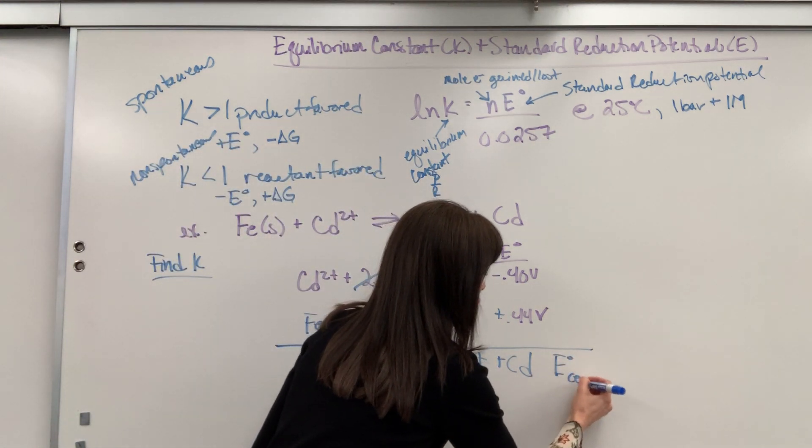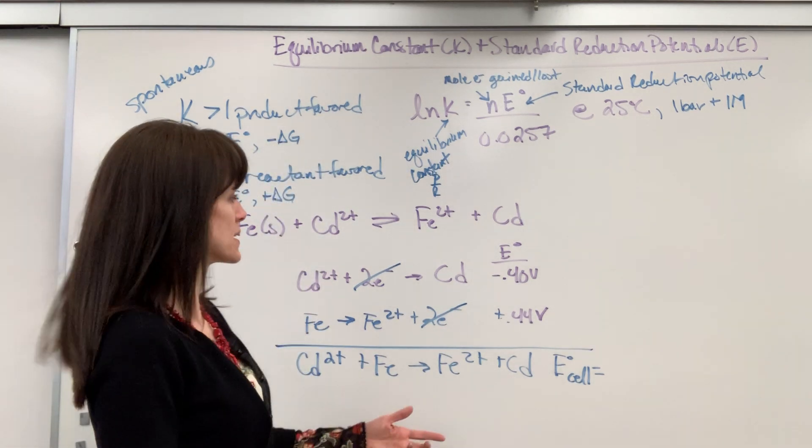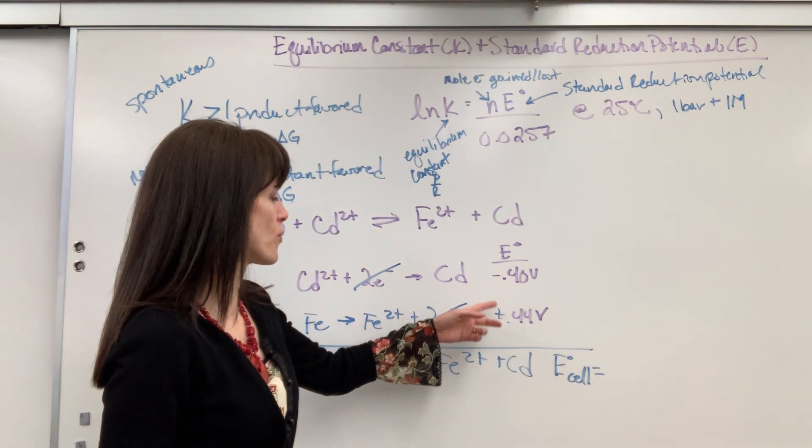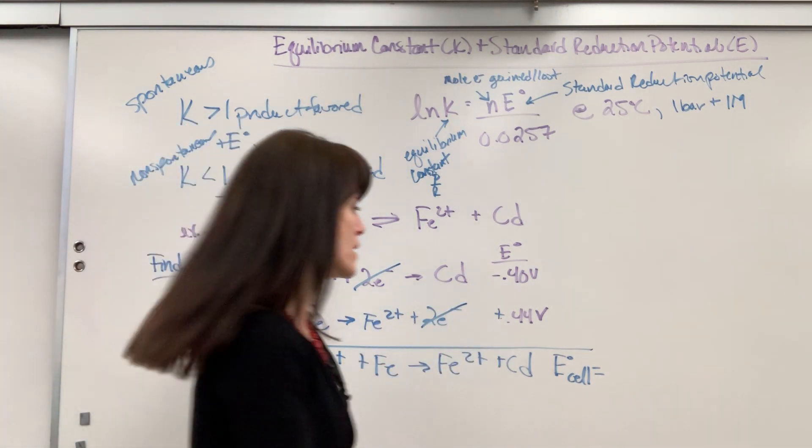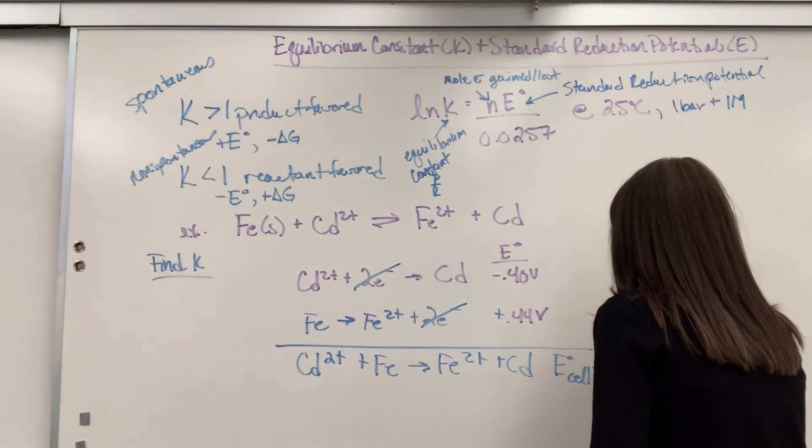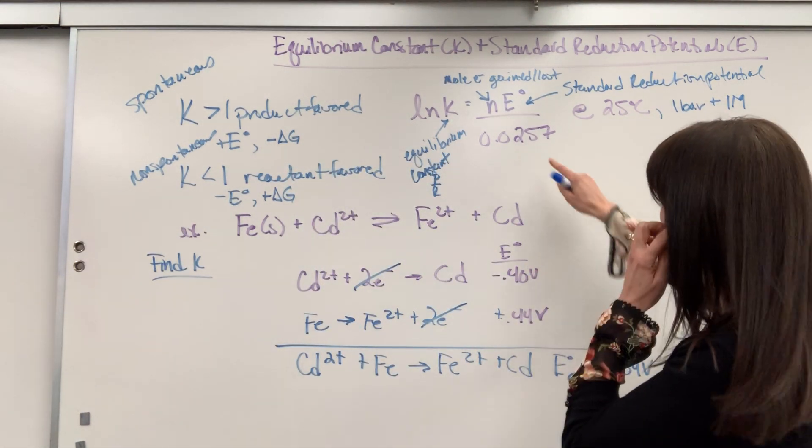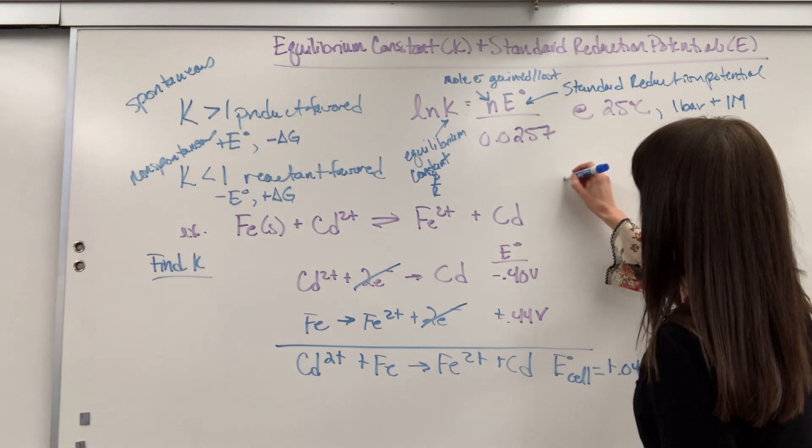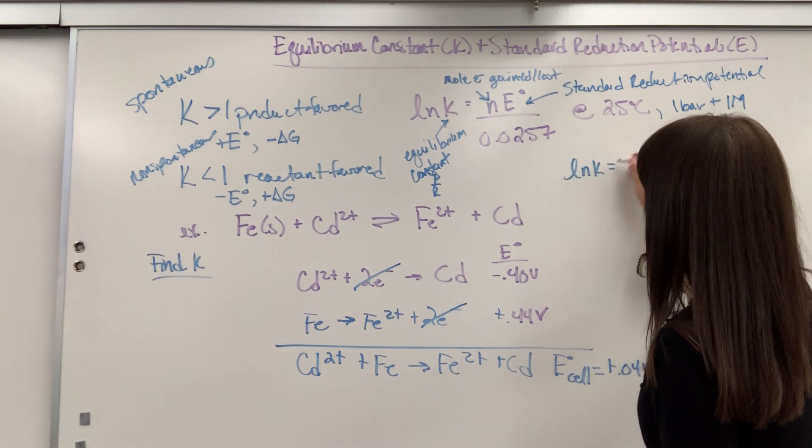Now all we have to do is add the E values. So the potential for this electrochemical cell is going to be -0.4 plus 0.44. We're going to get a positive 0.04, and that's in volts.